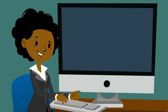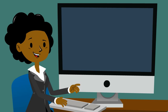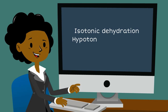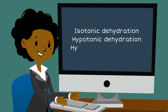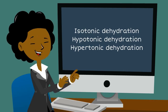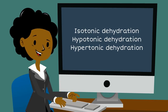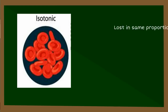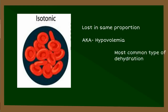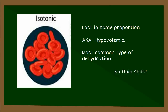There are three types of fluid volume deficits. You can have an isotonic dehydration, a hypotonic dehydration, or a hypertonic dehydration. With isotonic dehydration, the water and the electrolytes are lost in the same proportion. This is also known as hypovolemia, and it is the most common type of dehydration.